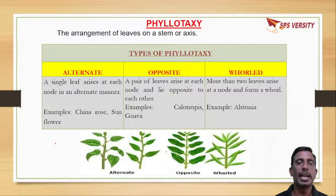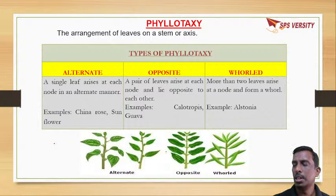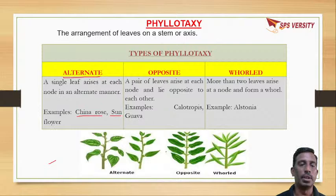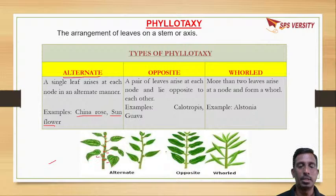Our next topic is phyllotaxi - the arrangement of leaves on the stem. There is a specific pattern; they are not arranged randomly. If one leaf arises from each node in an alternating pattern, it is called alternate phyllotaxi - examples are China rose and sunflower. If two leaves arise from each node opposite to each other, it is called opposite phyllotaxi.